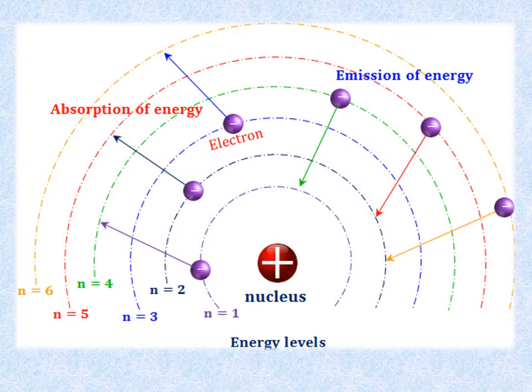If energy is injected into an electron in a lower shell or energy level it can absorb that energy and jump up one, two or more energy levels. This is known as atomic absorption.